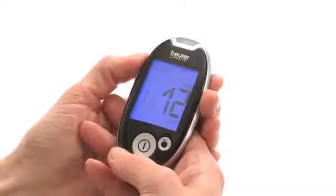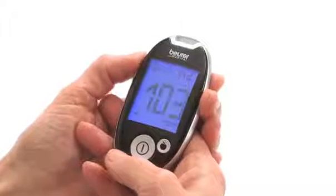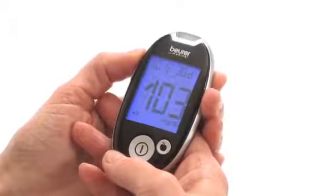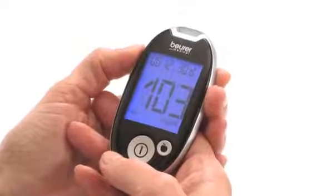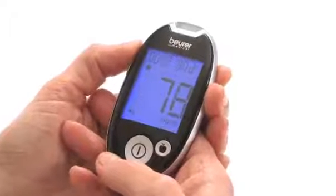From the 480 saved values, the average blood glucose value can be calculated for 7, 14, 30, or 90 days for all measured values and marked values.